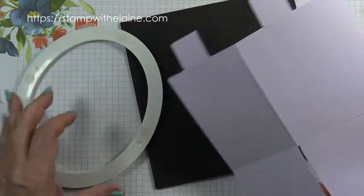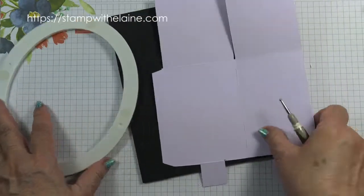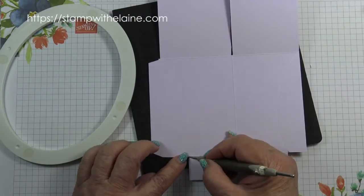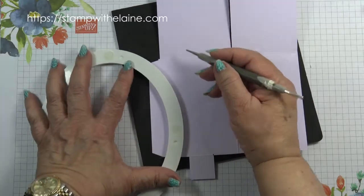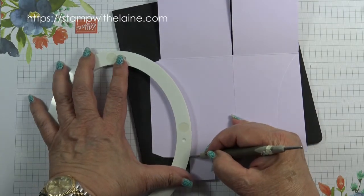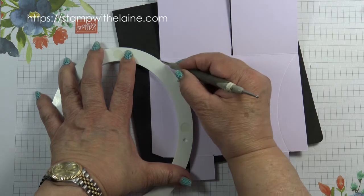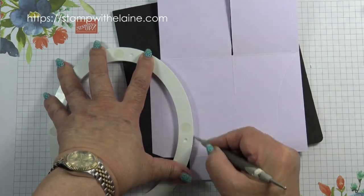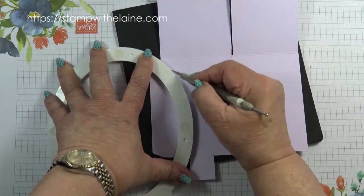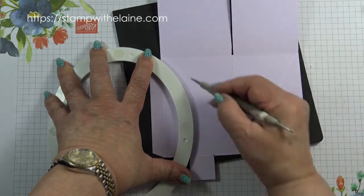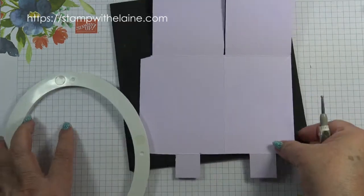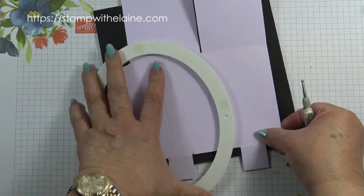Now turn your paper upside down and you're scoring from this point to that point. Put your stylus there, butt your oval or plate, and make your score there. And then do the same for here.